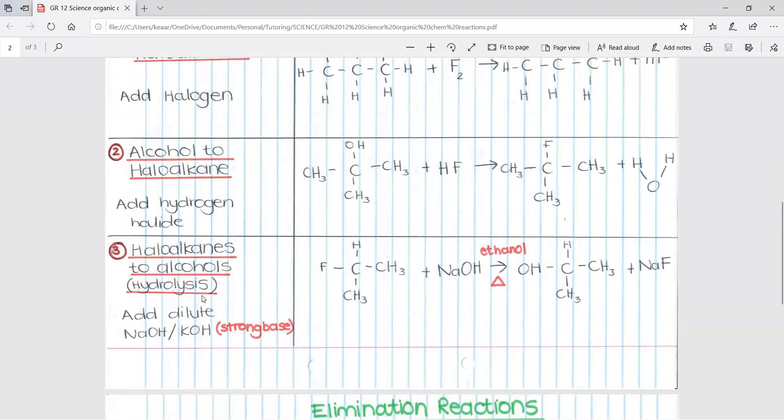The third one is hydrolysis. This is when haloalkanes change into alcohols. When you add dilute sodium hydroxide or potassium hydroxide, this is a strong base. So here is an example. We have a haloalkane using fluorine and we are adding sodium hydroxide. The OH in the sodium hydroxide replaces or substitutes with the fluorine and becomes an alcohol. The fluorine that was replaced by the OH then joins to the sodium, like so. This reaction needs heat. This triangle needs heat and it needs ethanol.